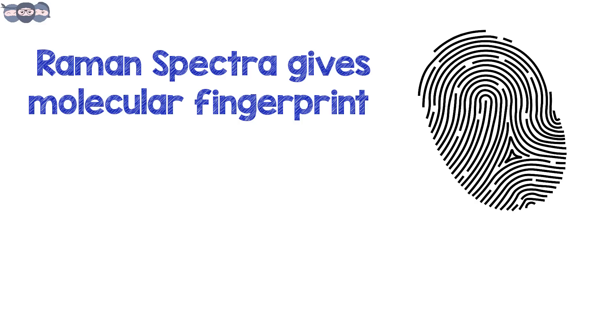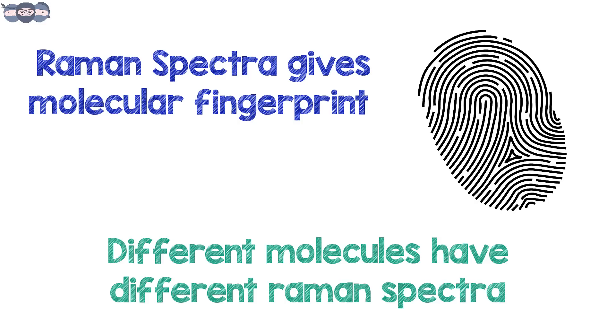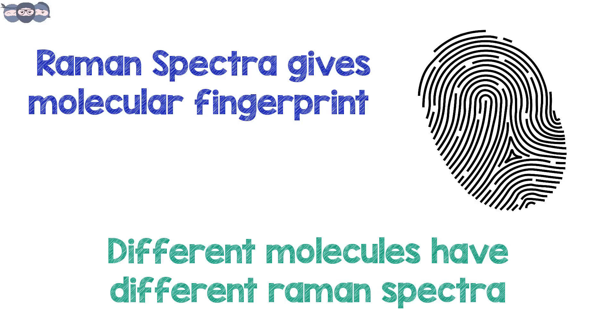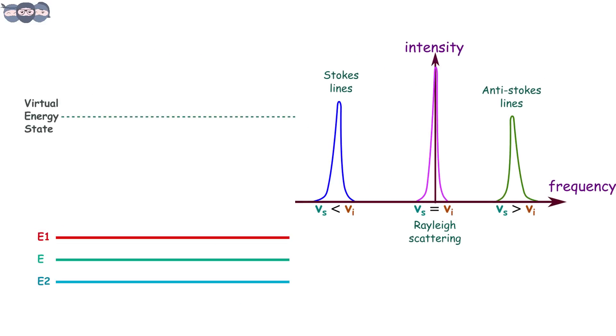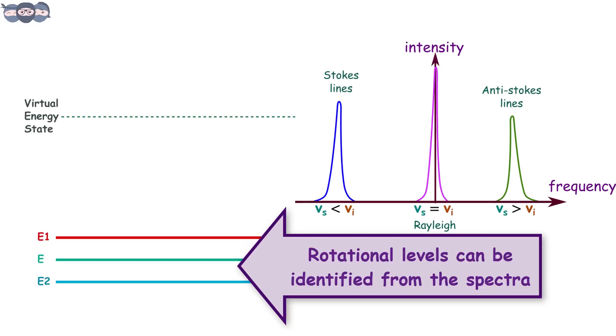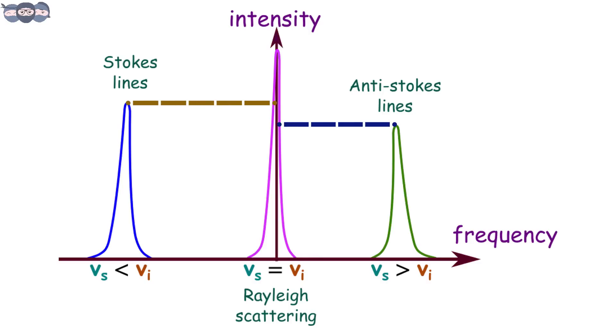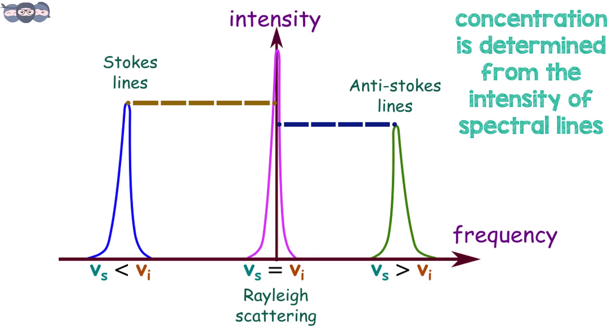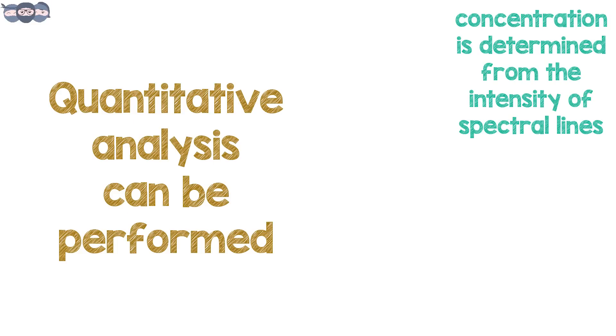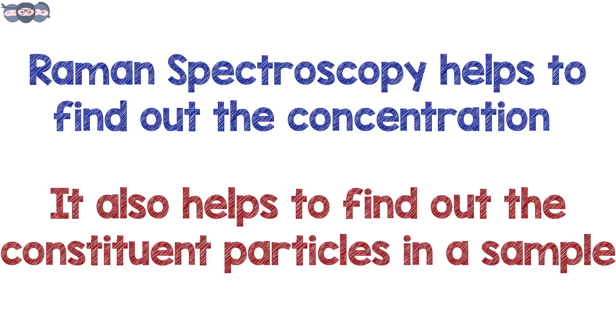The Raman spectra gives the molecular fingerprint and it is different for different molecules. By studying the spectra, one can identify the rotational levels and thus a particular molecule. This helps in performing qualitative analysis. Similarly, the intensity of a particular Raman line helps one determine the concentration of a molecule in a sample. In this manner, quantitative analysis can be done. Thus, Raman spectroscopy can be used to perform both qualitative and quantitative analysis on a sample.